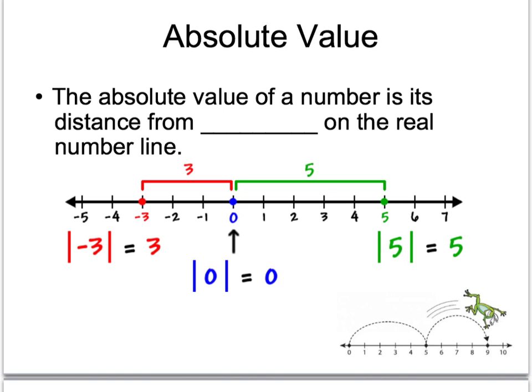Alright, now, absolute value, something we should be familiar with. The absolute value of a number is the distance from zero on the real number line. Now, these little bars are called absolute value bars and so, the absolute value of negative three is equal to three because it's three units away from zero on the number line. This little guy down here, I was looking for a number line online and I just like the frog so he doesn't really mean anything. He's just there to make you smile.